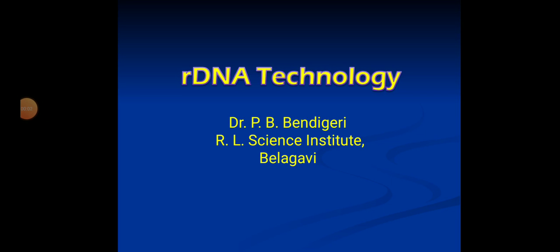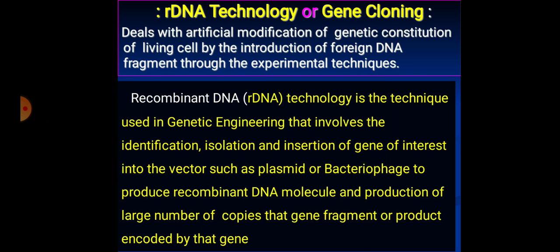Today we shall discuss R-DNA technology, recombinant DNA technology. Recombinant DNA technology is a major branch of genetic engineering where the genetic setup of an individual is modified by introducing a new gene segment into it. R-DNA technology is also referred to as gene cloning. It deals with artificial modification of the genetic constitution of living cells by introducing a foreign gene segment through experimental techniques.